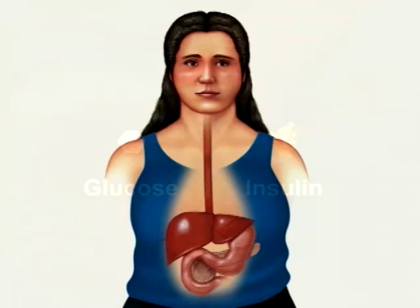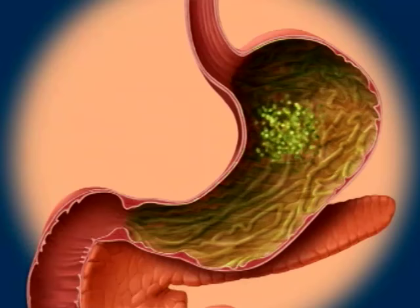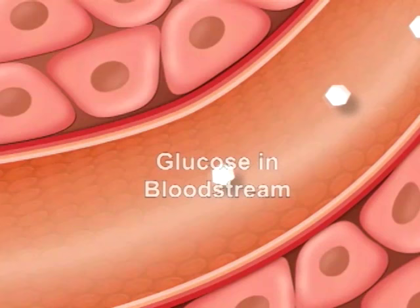The food you eat consists of three basic nutrients: carbohydrates, protein, and fat. During digestion, chemicals in your stomach break down carbohydrates into glucose, which is absorbed into your bloodstream.